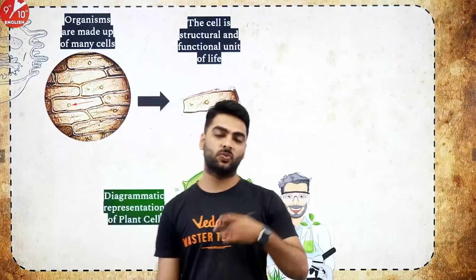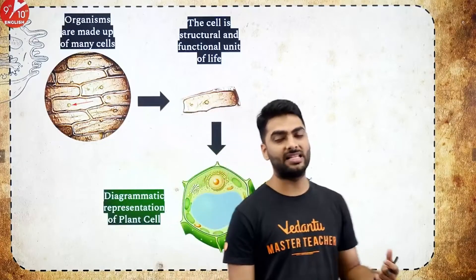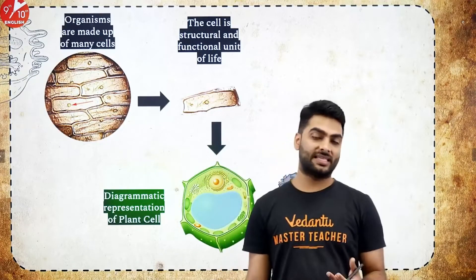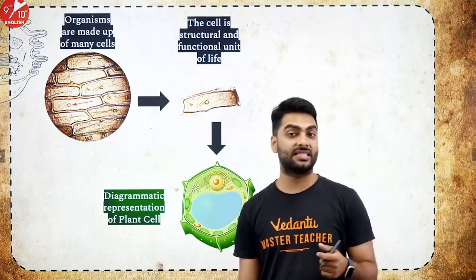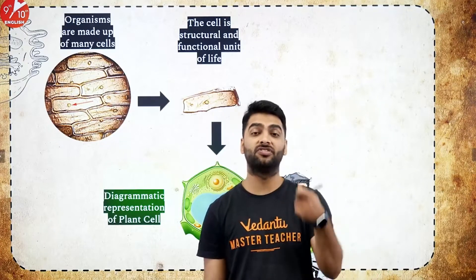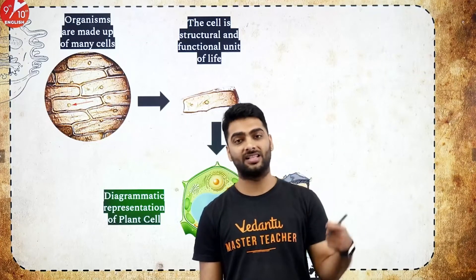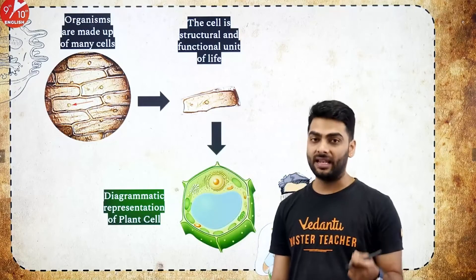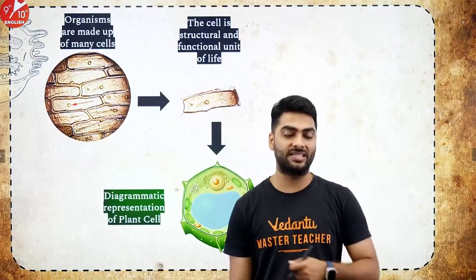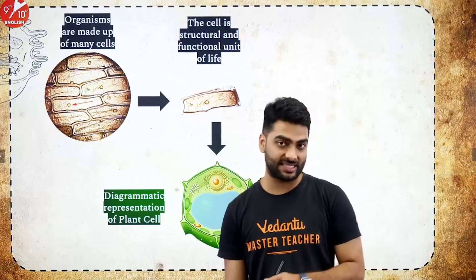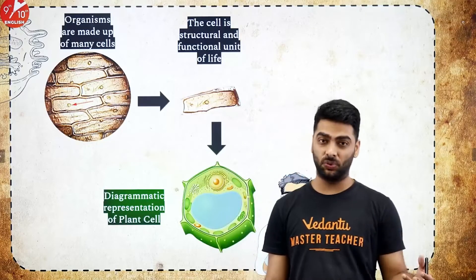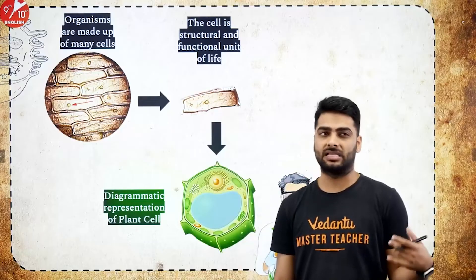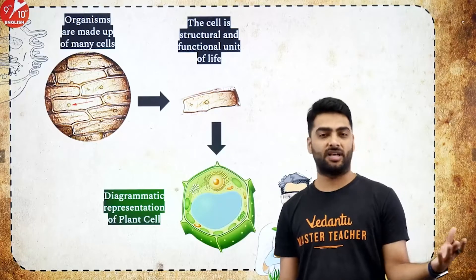Let me quickly take you through the timeline. Cells were discovered by the English scientist Robert Hooke in the year 1665 when he observed the cork cells of an oak tree under his own made microscope. Then Sir Anthony Van Leeuwenhoek discovered living cells, which he called animalcules. These cells included bacteria, muscle cells, RBC, amoeba, et cetera.